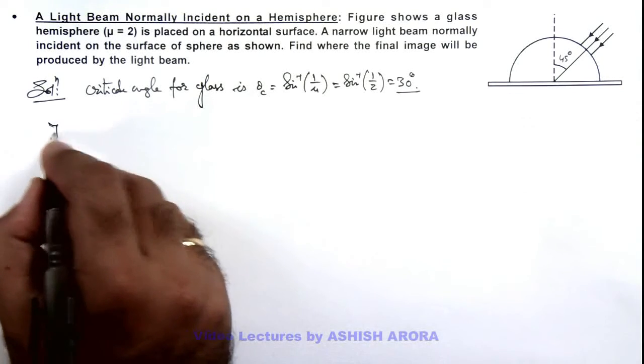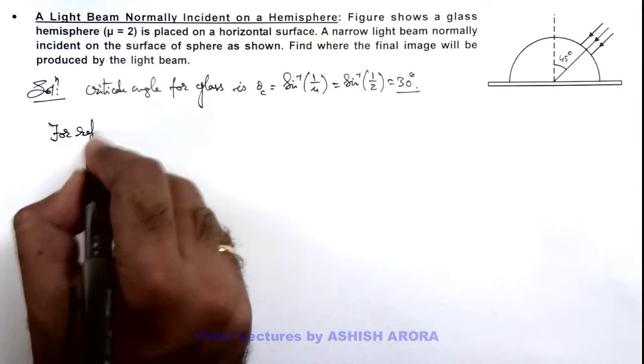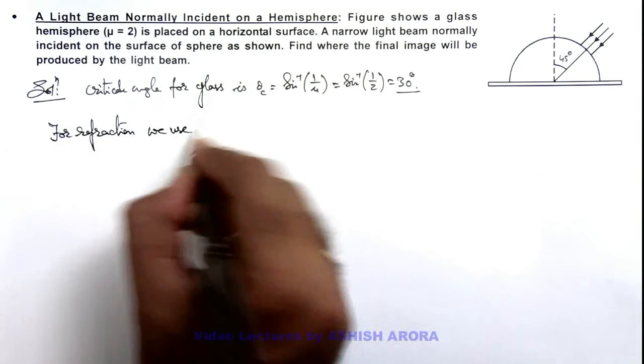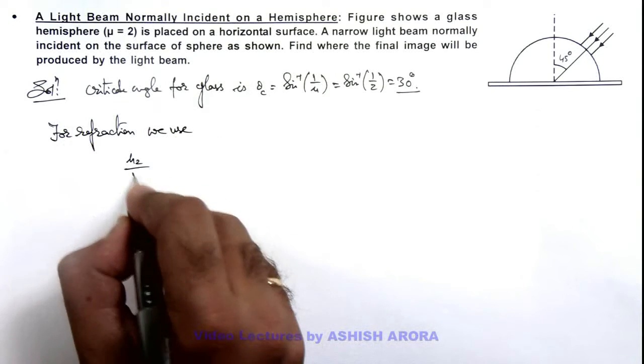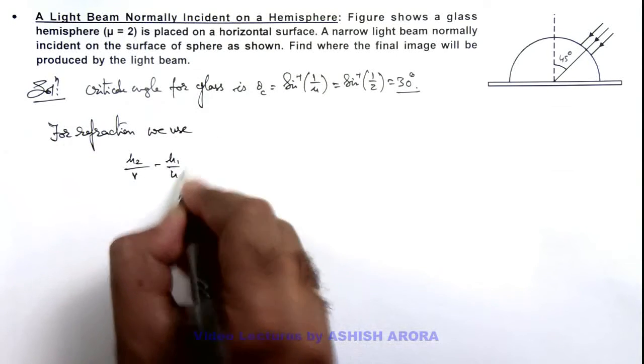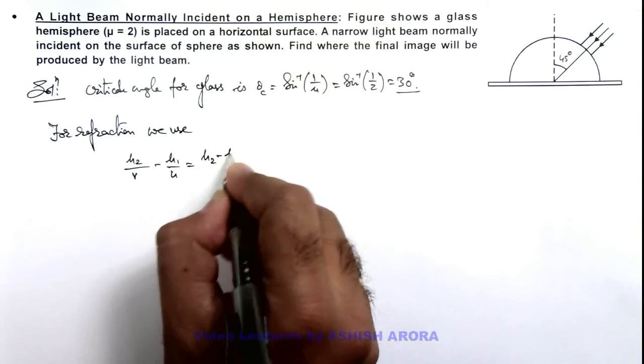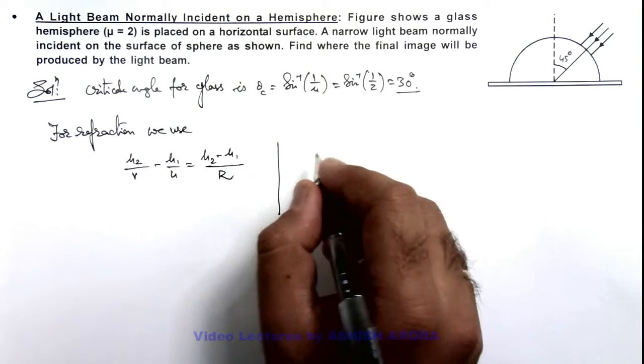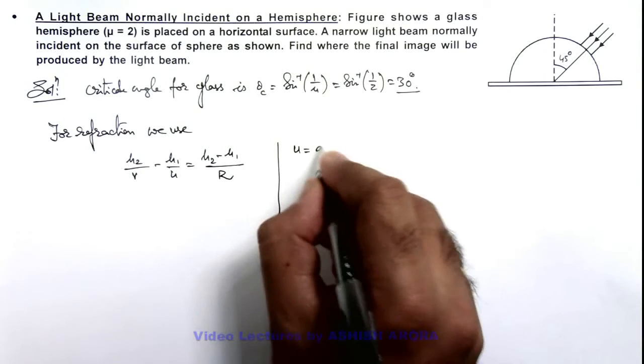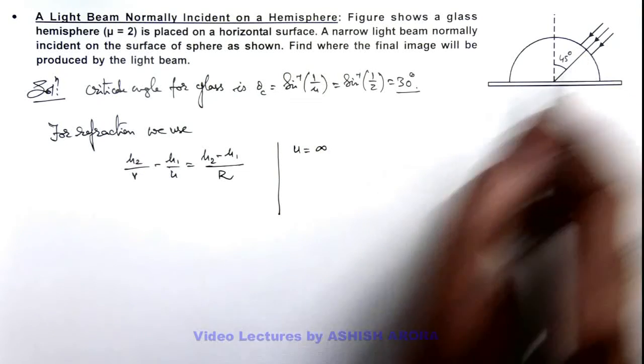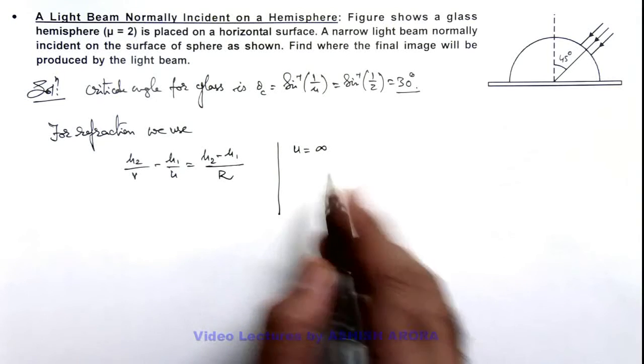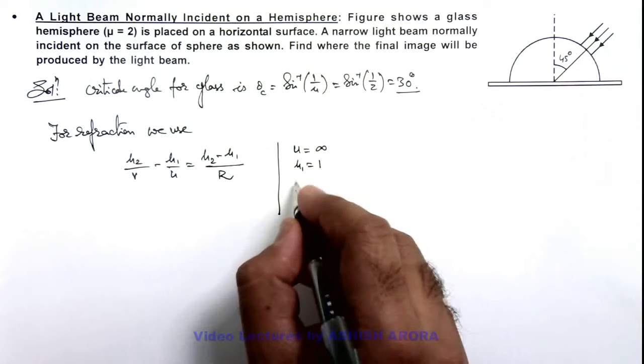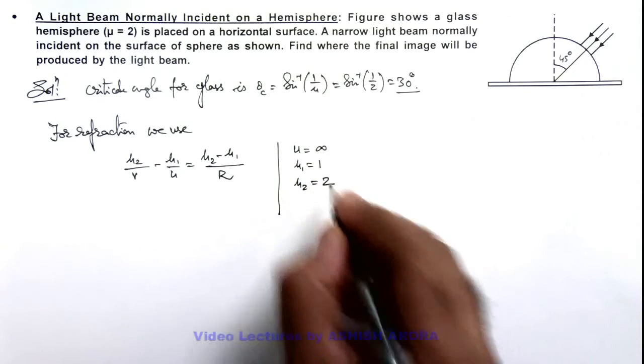For refraction, we use the formula: μ₂/v minus μ₁/u equals (μ₂ minus μ₁)/R. With sign conventions, we substitute the values. u can be taken as infinity because parallel light rays are incident onto it. μ₁ we take as 1, as light is coming from air. μ₂ we take as 2, which is given.